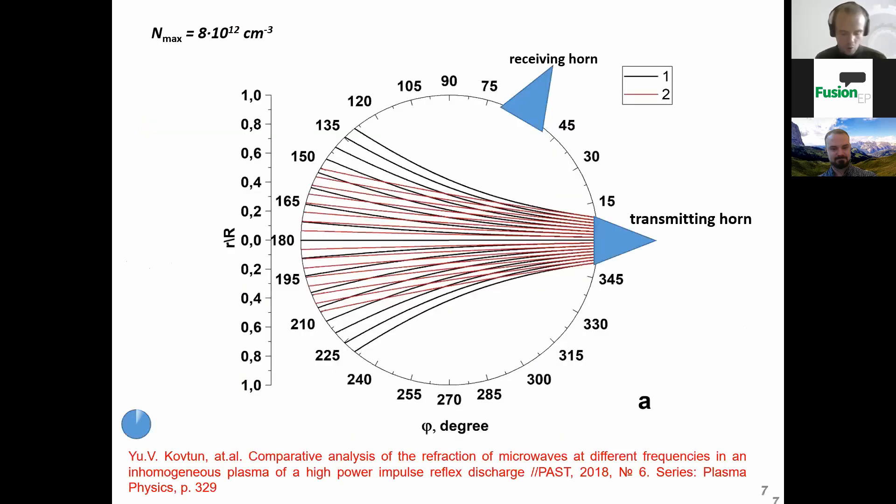At first, we wanted to know whether the rays at 8 and 4 mm hit the receiving horn or not. By varying the density, we consider three cases. With this value of plasma density, the plasma is transparent so no rays hit the horn antenna.